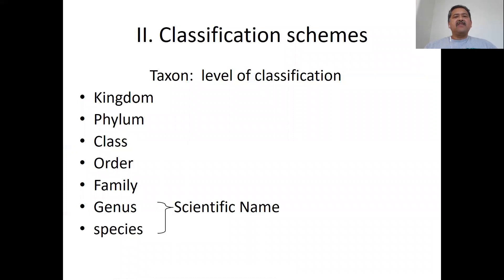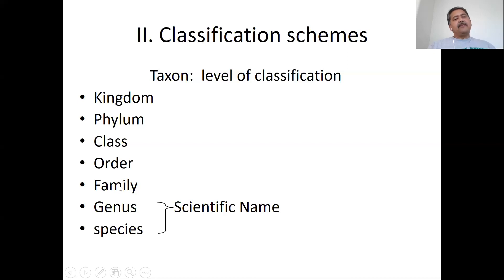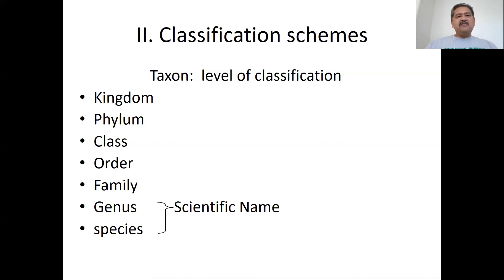Here you have levels of classification. The genus and species name, which make up the scientific name, are the last two groups. If we were to take all living things and classify them into a group, we would have six groups called kingdoms. Each kingdom is subdivided into a smaller group called a phylum. Each phylum breaks down into a class, then orders, then families, then genera, then each genus breaks down into a species. Individuals in the same species can reproduce successfully.